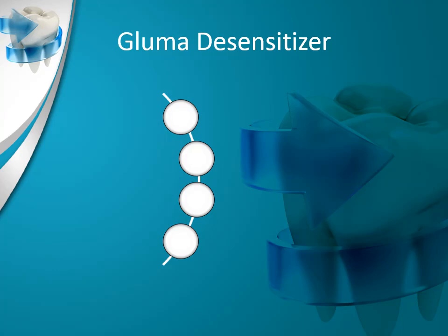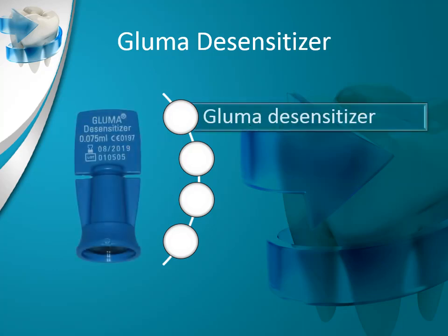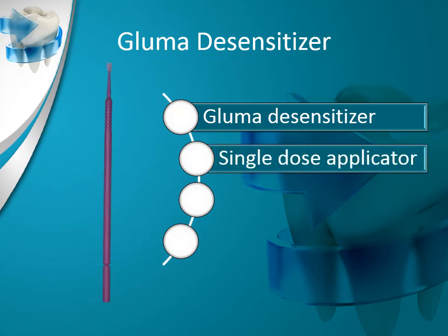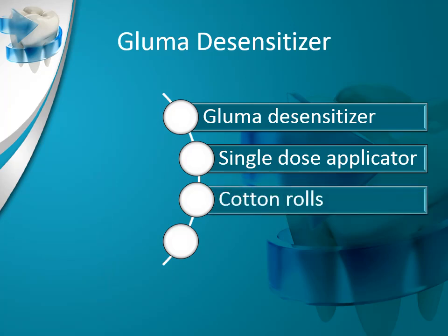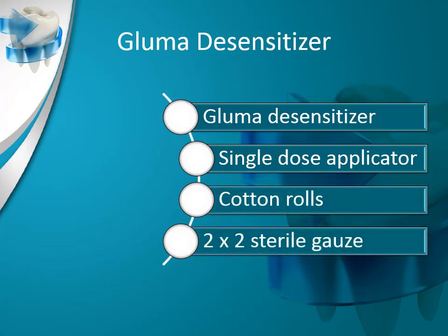To place GLUMA on a patient, you will need the following supplies: GLUMA desensitizer, a single-dose applicator, cotton rolls, and 2x2 sterile gauze.